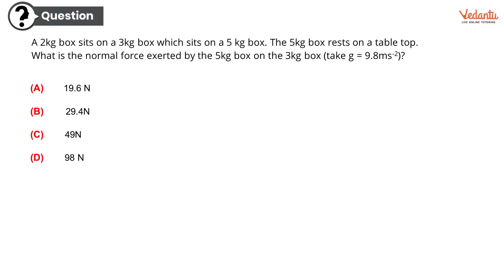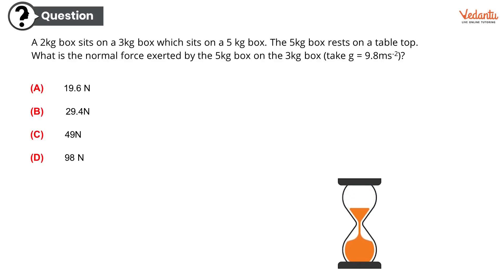The options are option A, 19.6 Newtons; option B, 29.4 Newtons; option C, 49 Newtons; or option D, 98 Newtons. Well, well, well, I hope you got it right. The correct option is option C, 49 Newtons. Congratulations, you have done a great job.